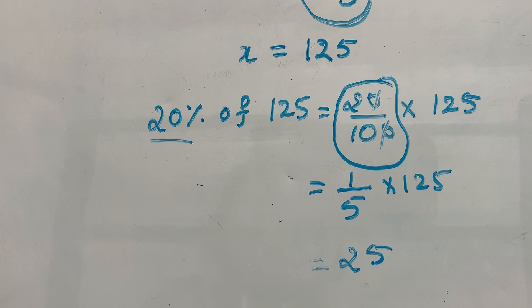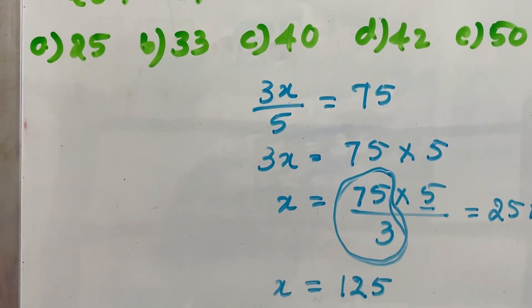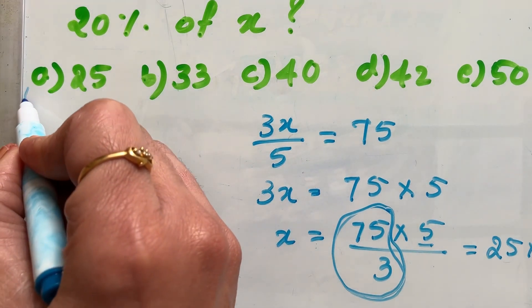So, 20% of 125 is 25. So correct option is option A.